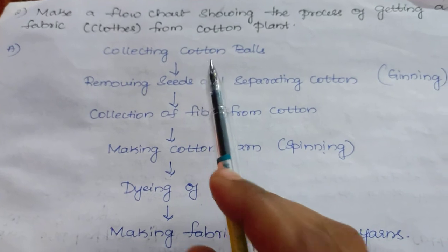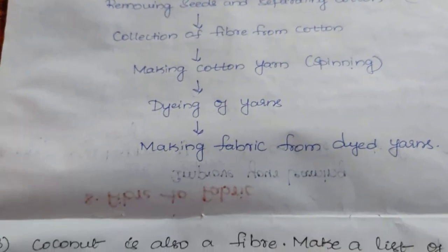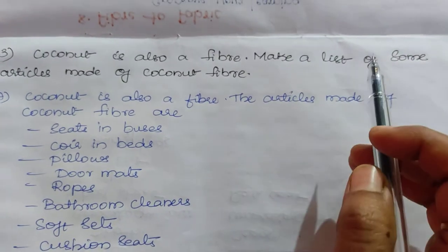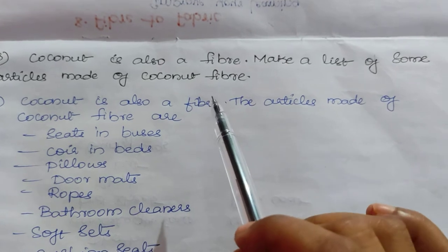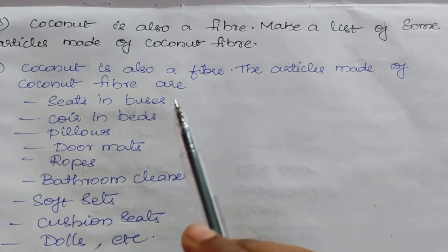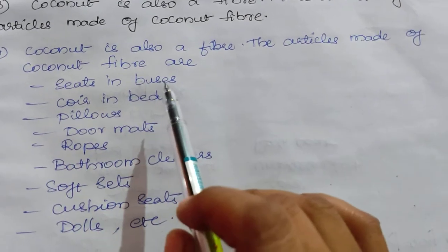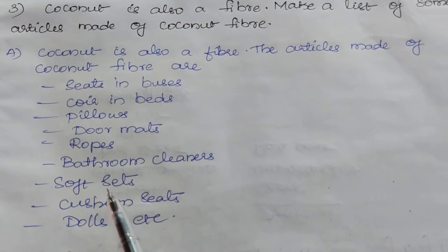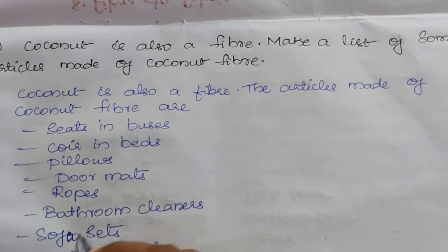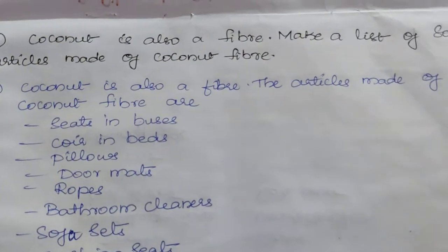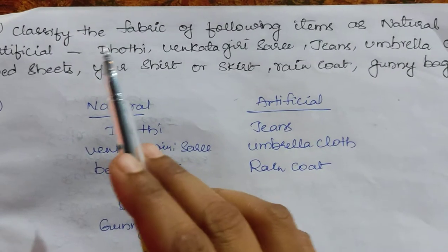Third question: coconut is also a fiber — make a list of some articles made from coconut fiber. The articles made of coconut fiber are: seats in buses, coir in beds, pillows, doormats, ropes, bathroom cleaners, sofa sets, cushion seats, and dolls.